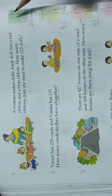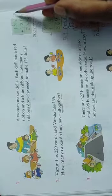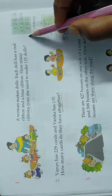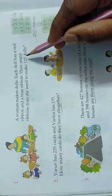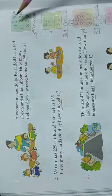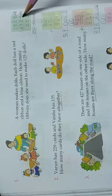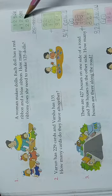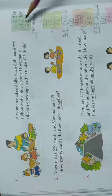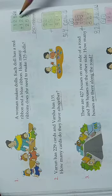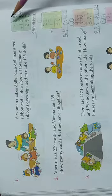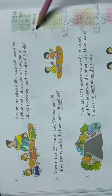So to make 125 dolls, you need 125 red ribbons and 125 blue ribbons. 125 red ribbons plus 125 blue ribbons - we're just going to add these two. We know that while adding, we have to start from one side. 5 plus 5, 10. One will be carried over. 2, 1, 3. 1 plus 1, 2. 250 ribbons.